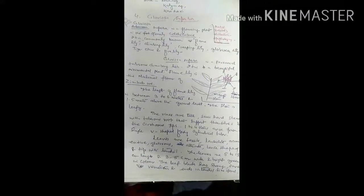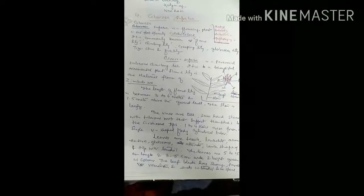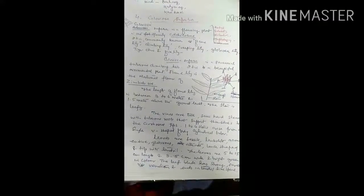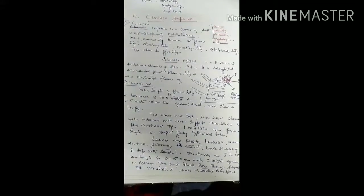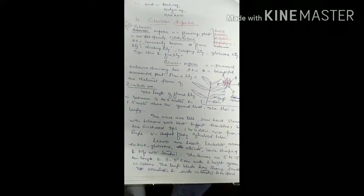Gloriosa Superba is a flowering plant. It belongs to the family called Higasi. It is commonly known as Flame Lily. It is known by different names.